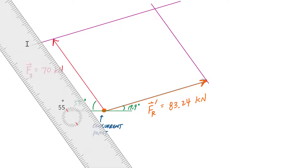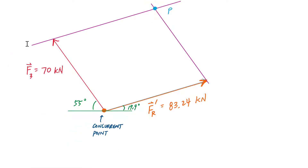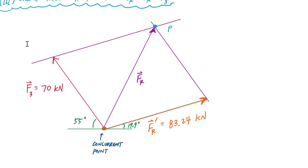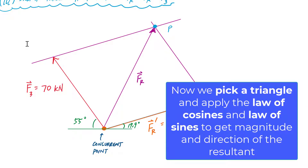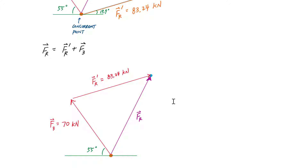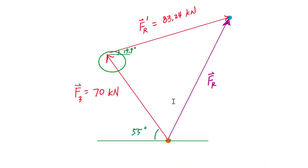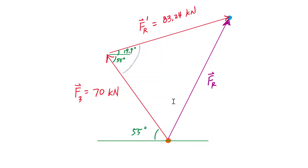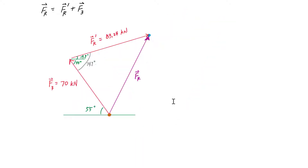The total resultant vector FR points from the concurrent point to the intersection of those parallel lines. I pick the triangle on the left for my vector triangle. FR prime is at 19.9 degrees from the horizontal, and the angle for F3 is 55 degrees, making the total interior angle 55 plus 19.9 equals 74.9 degrees. With two sides and the included angle, I apply the law of cosines.